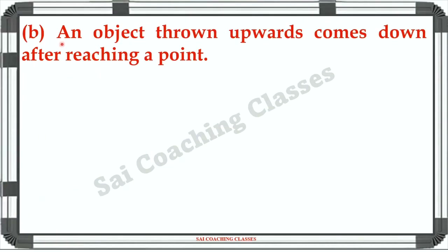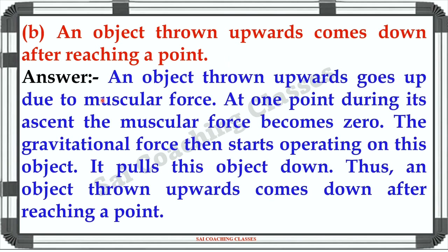B — An object thrown upward comes down after reaching a point. Answer: An object thrown upward goes up due to muscular force. At one point during its ascent, the muscular force becomes zero. The gravitational force then starts operating on the object and pulls it down. Thus, an object thrown upward comes down after reaching a point.